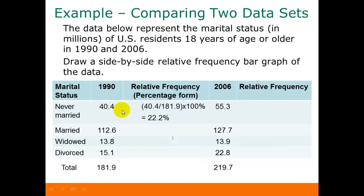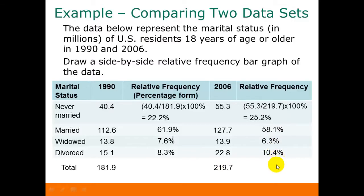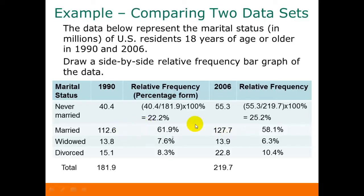For 1990, we're going to divide each category frequency by the total for that year, which was 181.9. For 2006, we divide by the total for that year, which was 219.7. Looking at the relative frequencies gives us a different picture. If we looked at the regular frequencies, it appeared widowed had increased slightly from 1990 to 2006, but as a percentage it actually decreased from 7.6% down to 6.3%. Similarly, the married category increased in actual numbers from 112.6 million to 127.7 million, but the percentage of the total decreased from 61.9% down to 58.1%.